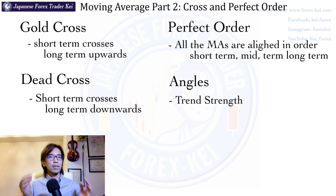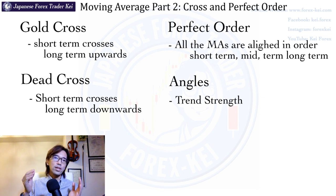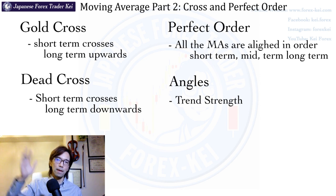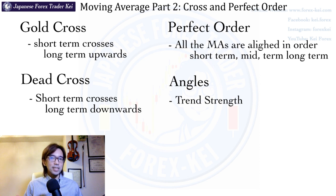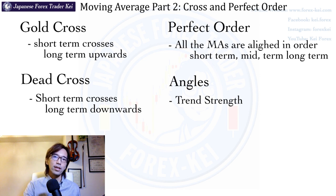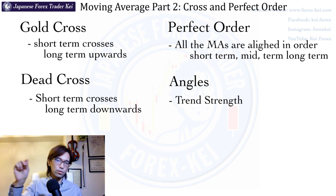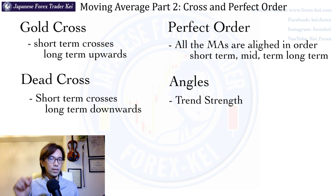When the market is in a range, you will see all the MAs are interacting with each other. But when there is a concrete trend in the market, let's say a bull trend, then all the MAs are aligned — short, mid, and long term from the candlesticks — and point towards the upside. Also, how you can identify the strength of the market is by looking at the angle of the MA. When the angle is steep, that means the trend is strong. When it's slightly going up, that means the trend is not so strong.